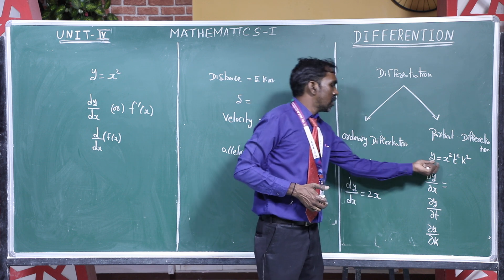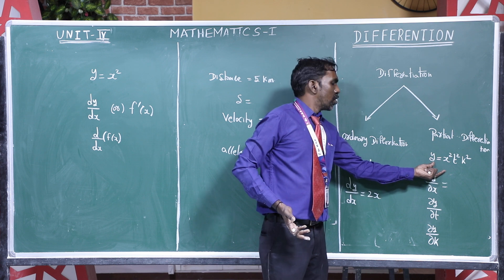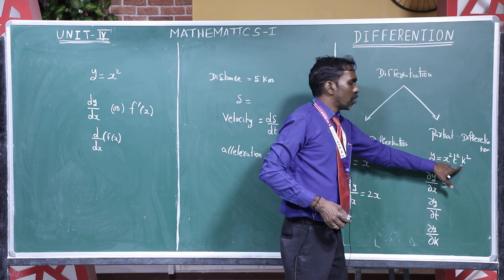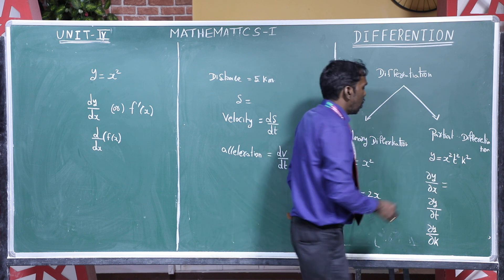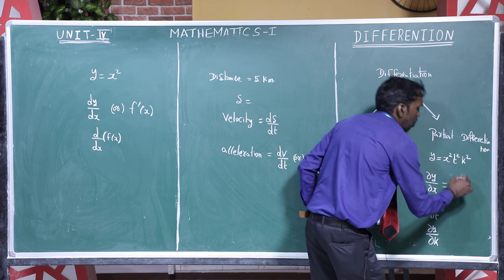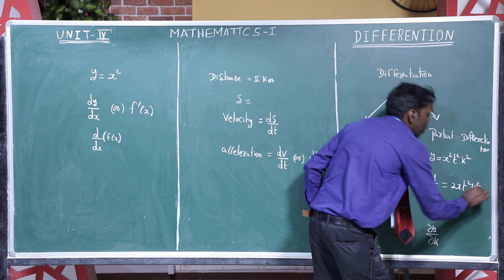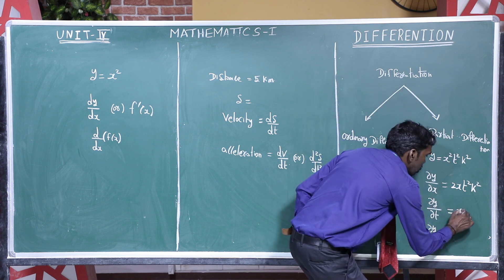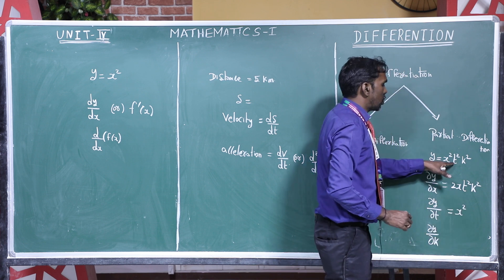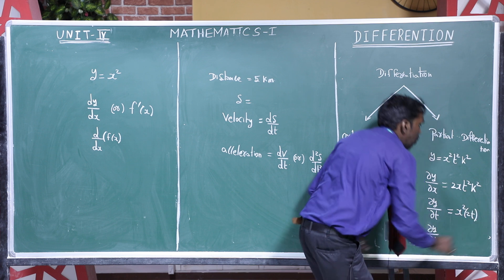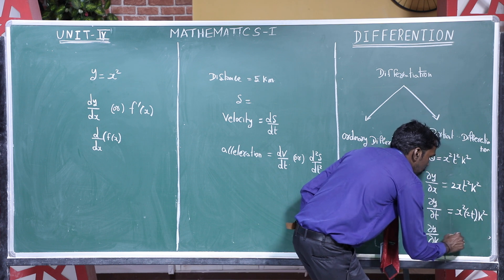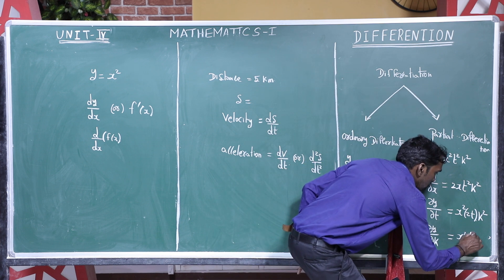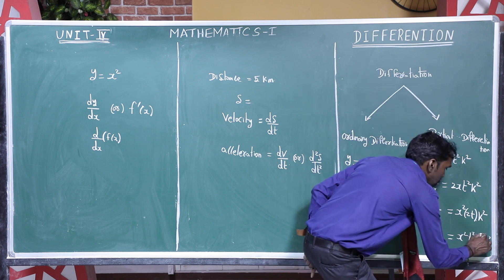In the same function with three variables x, t, and k, for dou y by dou x: differentiation of x square gives 2x, while t square and k square are treated as constants. For dou y by dou t: x and k are constants, so differentiation of t square gives 2t, and k square is constant. For dou y by dou k: x and t are constants, so the result is 2k.